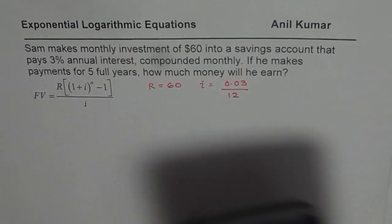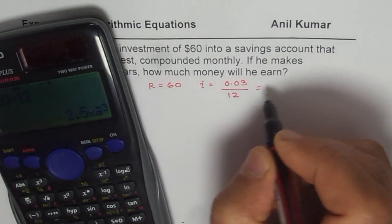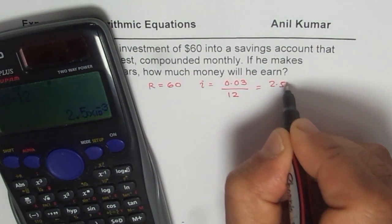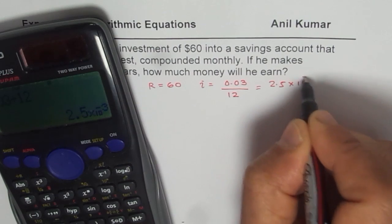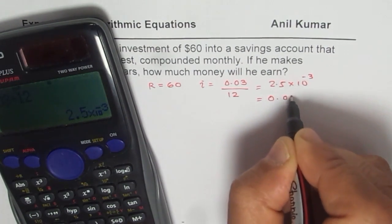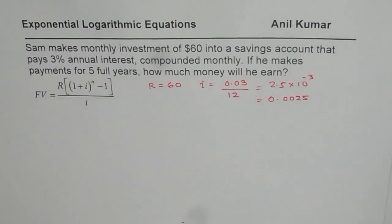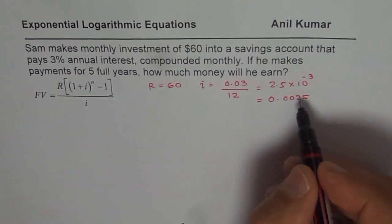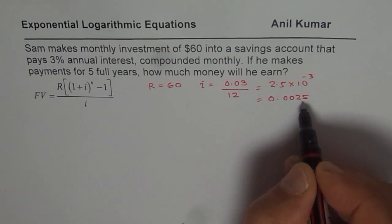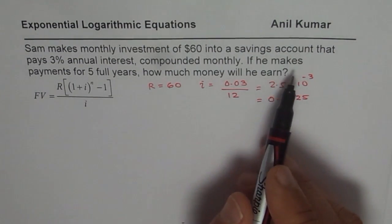Let us divide 0.03 by 12. We get 2.5 times 10 to the power of minus 3, that means 0.0025. So that is the decimal value, minus 3, 1, 2, and 3. So the interest compounded monthly is that much.